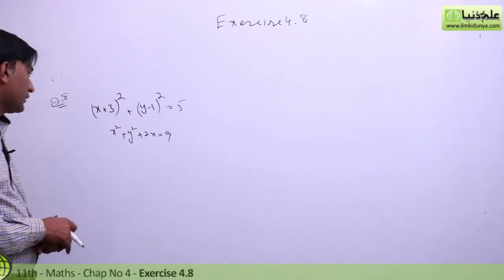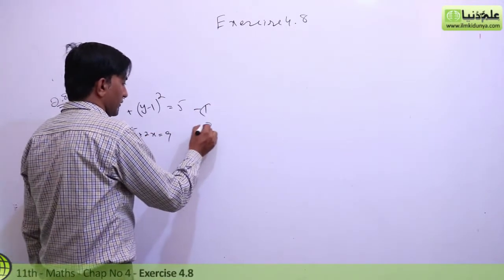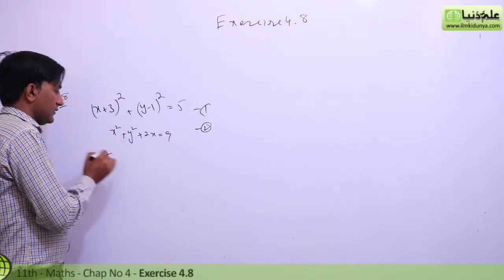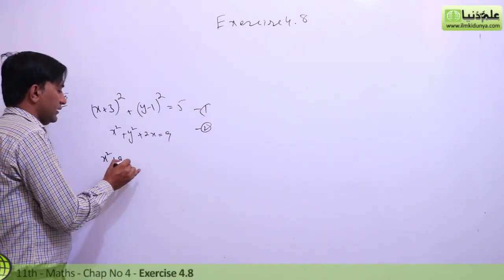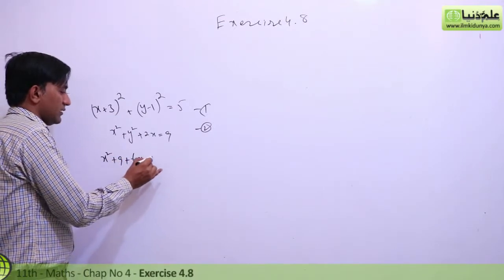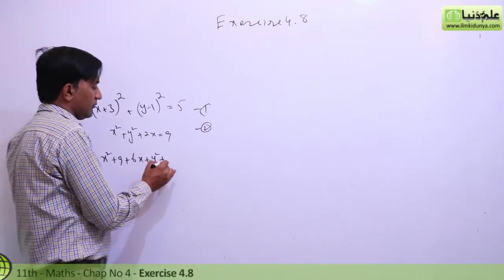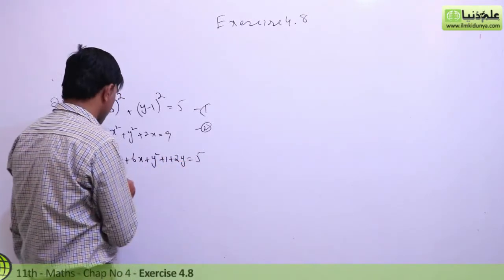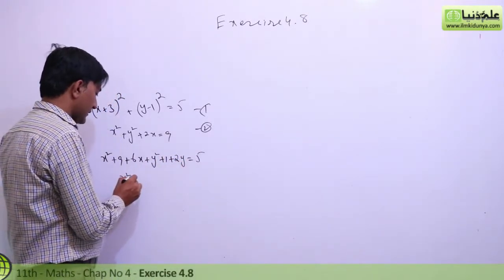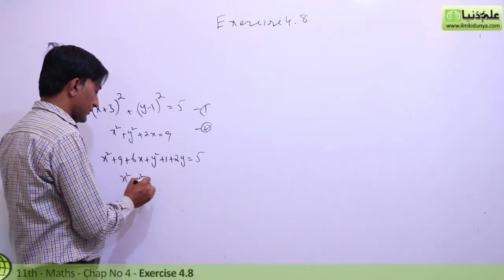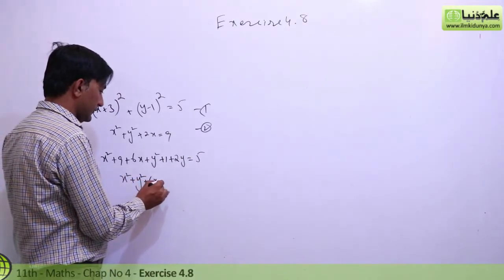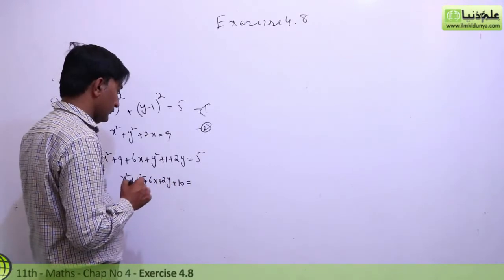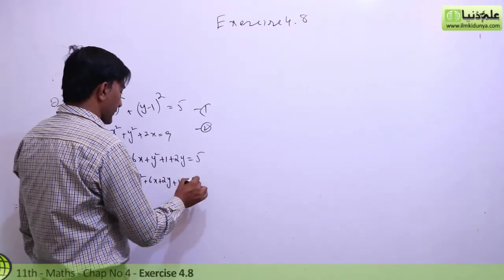I simplify the first equation: x square plus 9 plus 6x plus y square plus 1 plus 2y equal to 5. So x square plus y square plus 6x plus 2y plus 10 equal to 5.